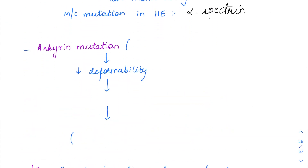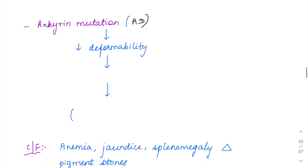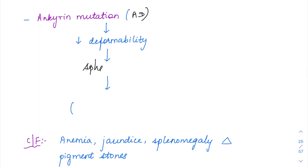When ankyrin mutation is present — it is an autosomal dominant mutation — it alters the RBC membrane, making it less deformable. RBC membranes normally have to be very deformable so they can squeeze through the splenic sinusoid when passing through the spleen. When there is a mutation in a membrane protein, the RBCs become less deformable, cannot pass through the splenic sinusoid, and form spherocytes — especially microspherocytes.